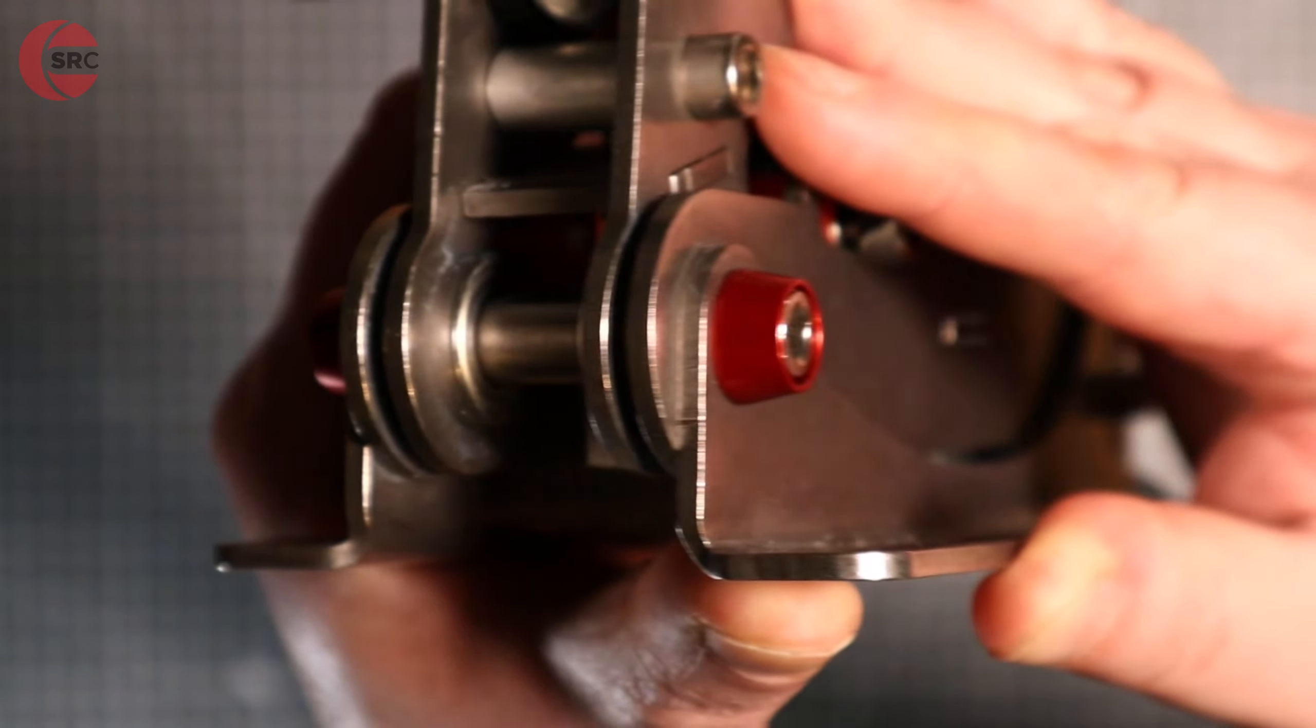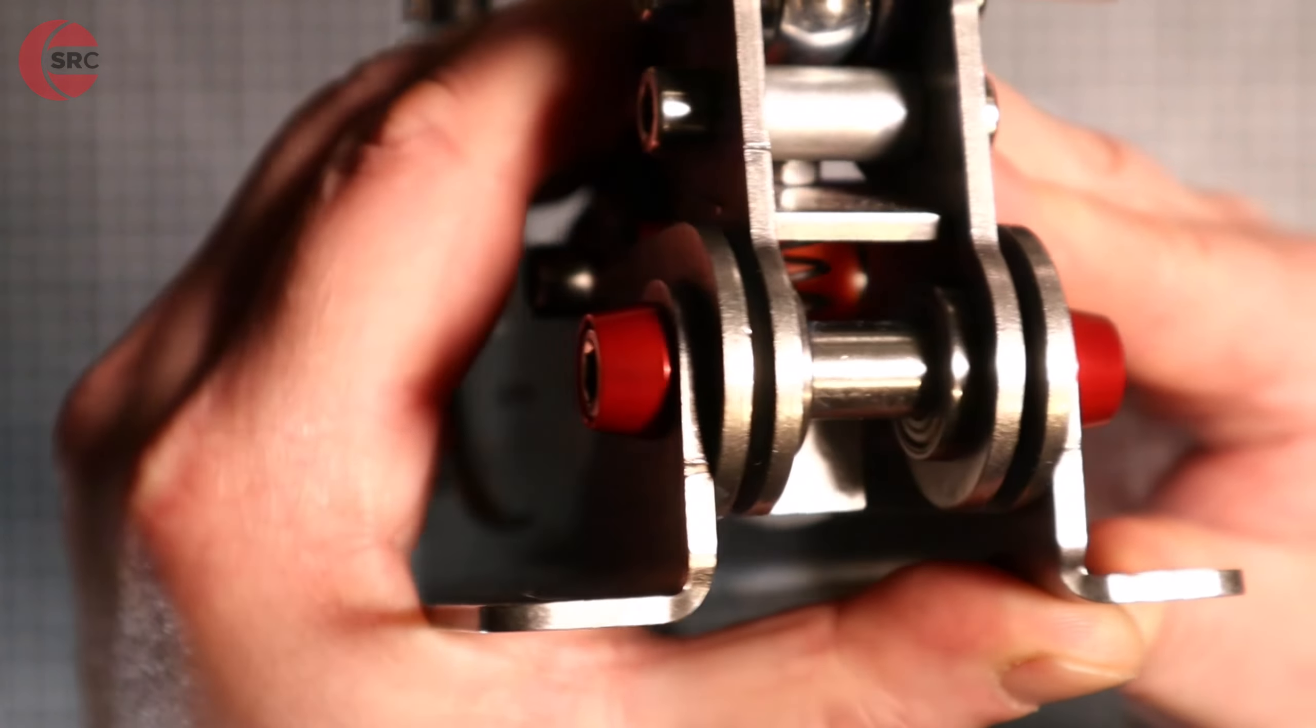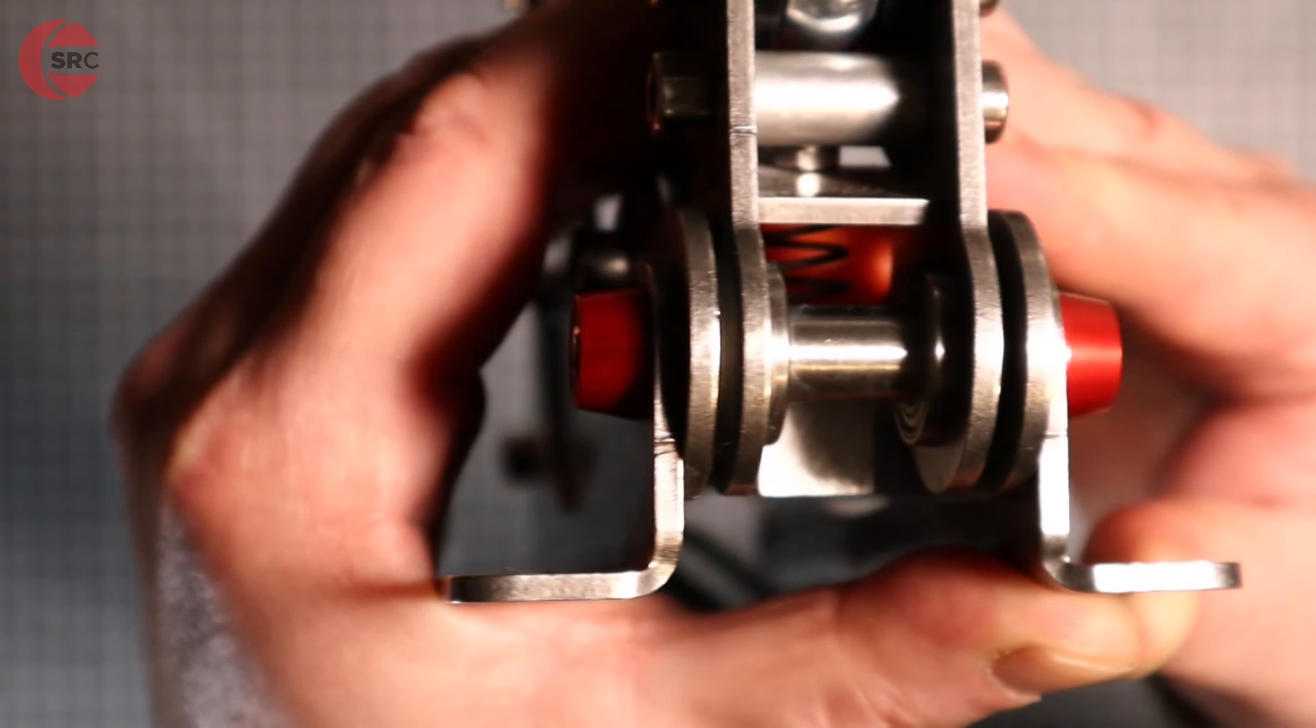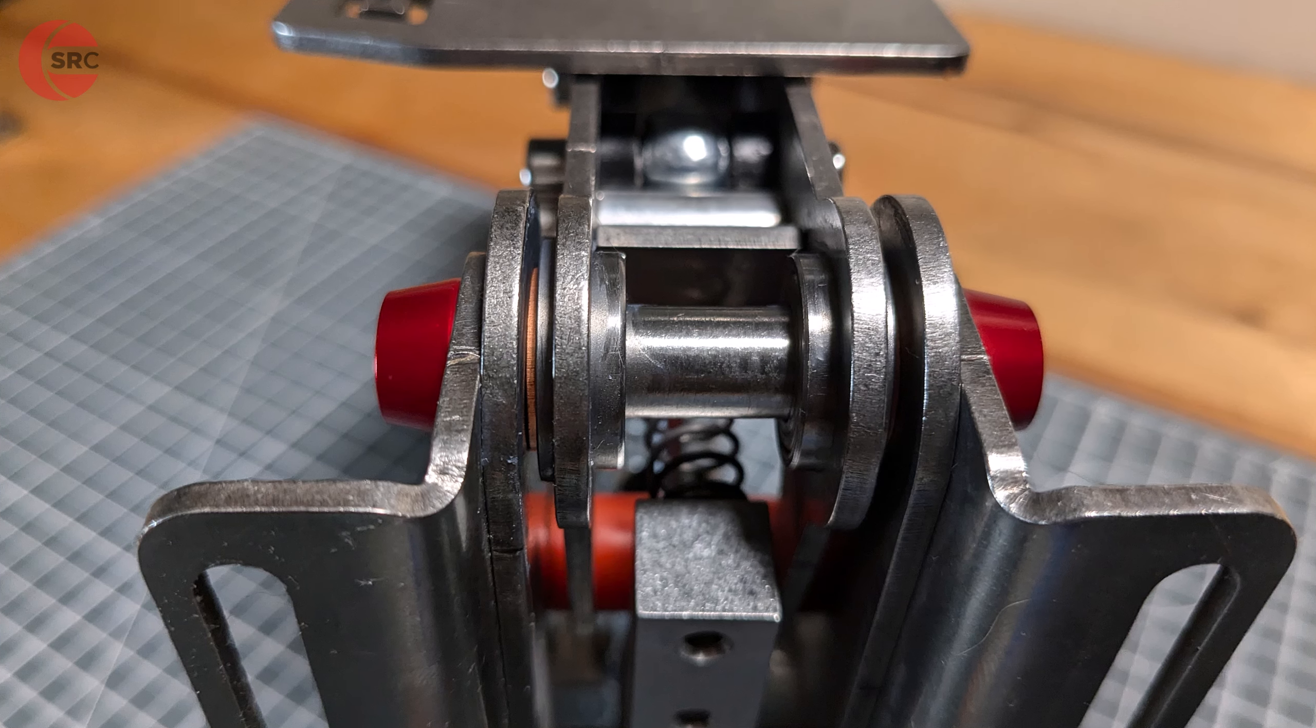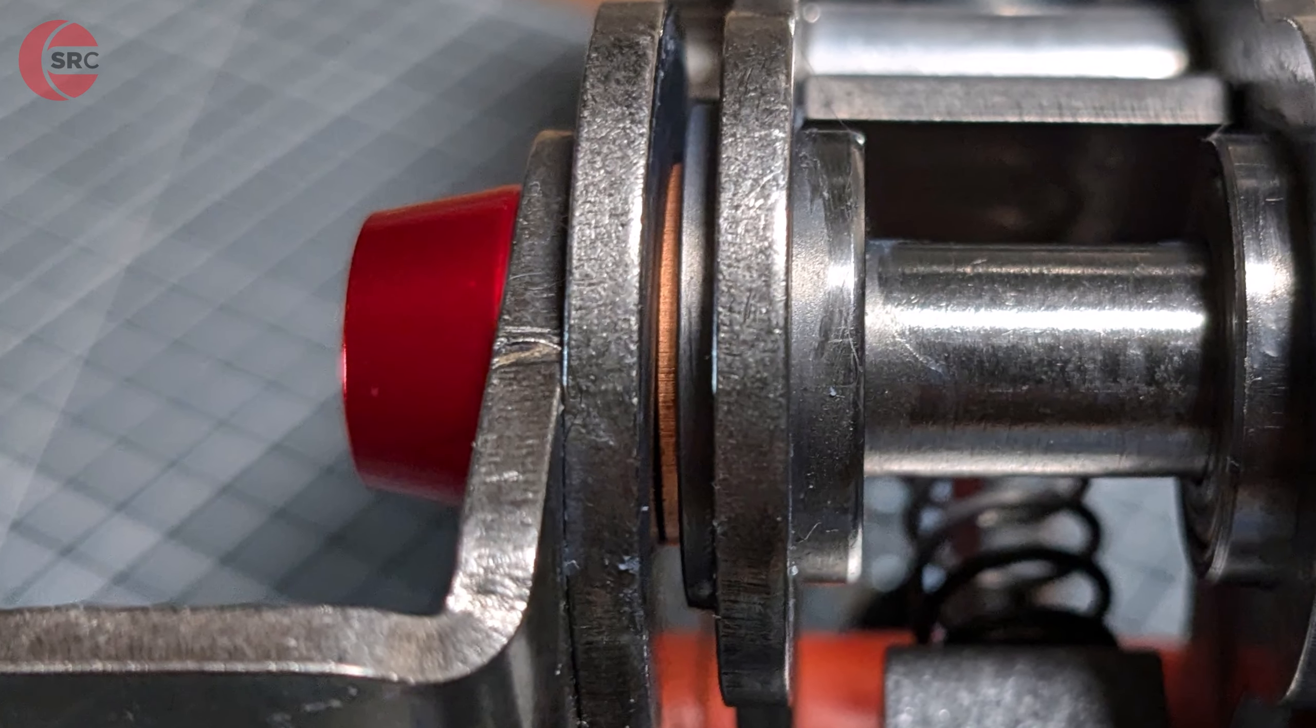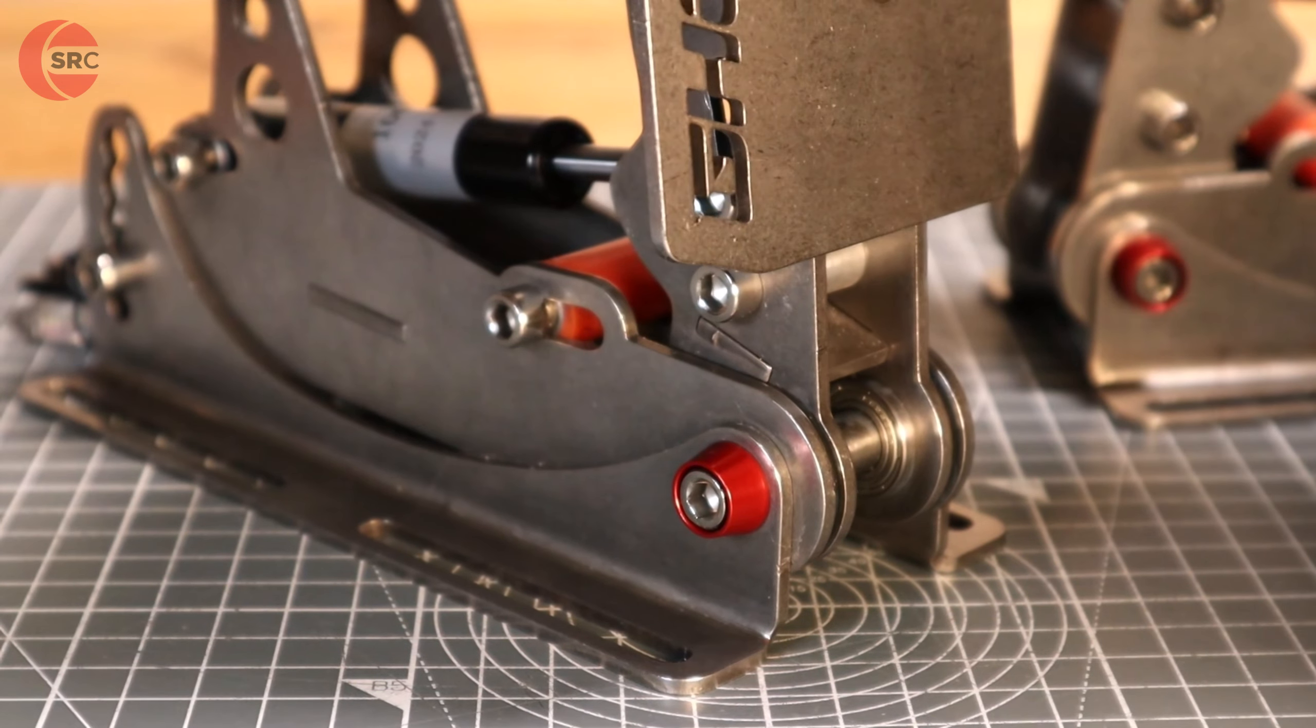The pedals use sturdy bearings on the pivot points. Ghost Sim Racing have added washers that the SimJack pedals don't. These prevent the side of the bearings from touching the frame. This reduces friction and gives the pedals a smoother motion.